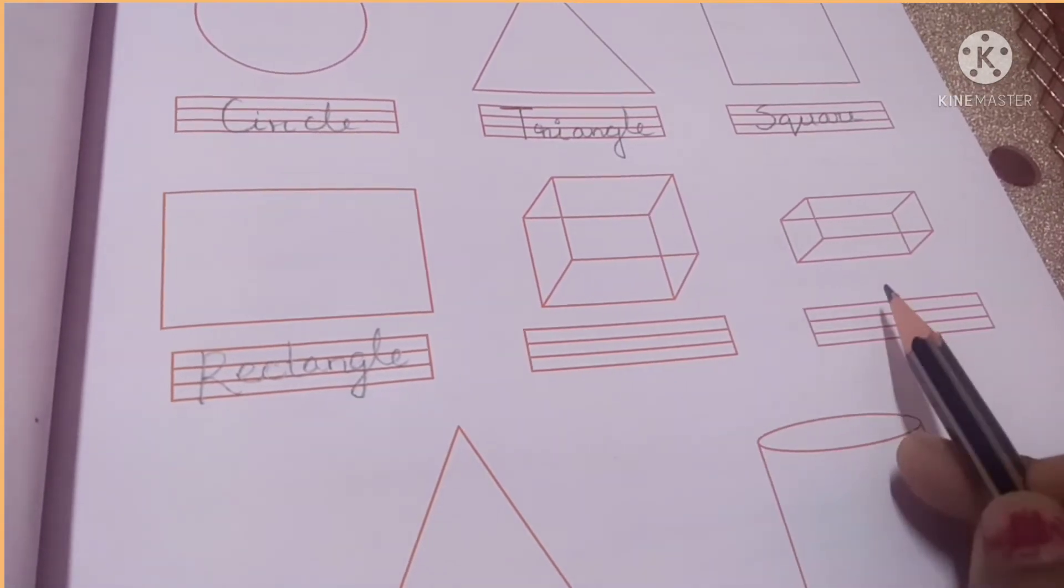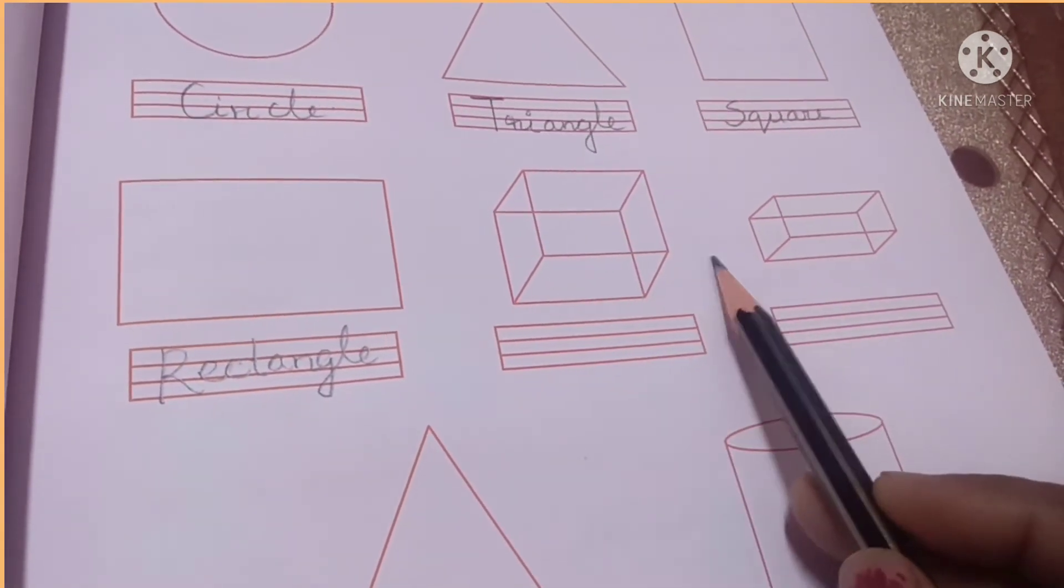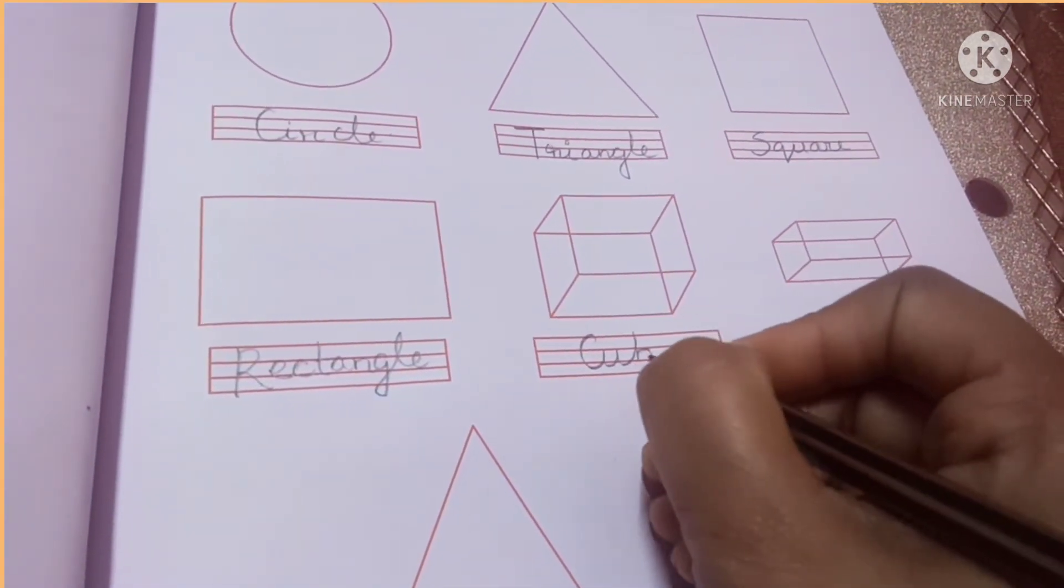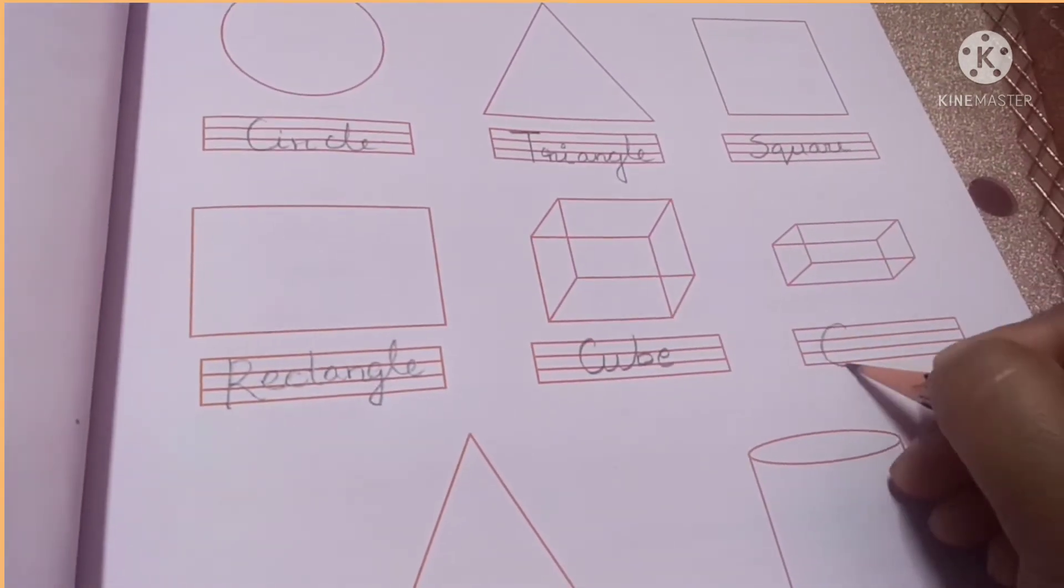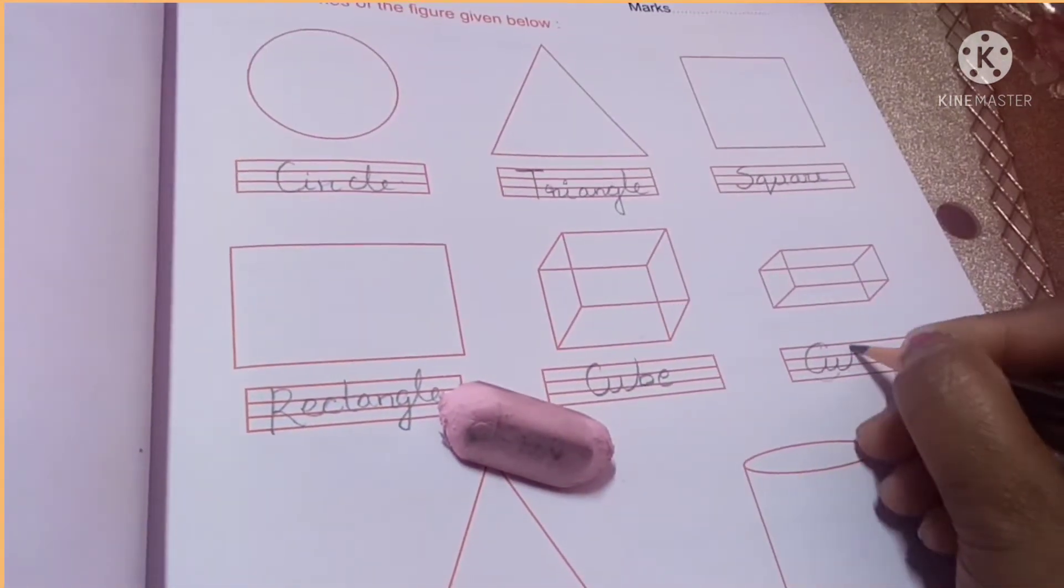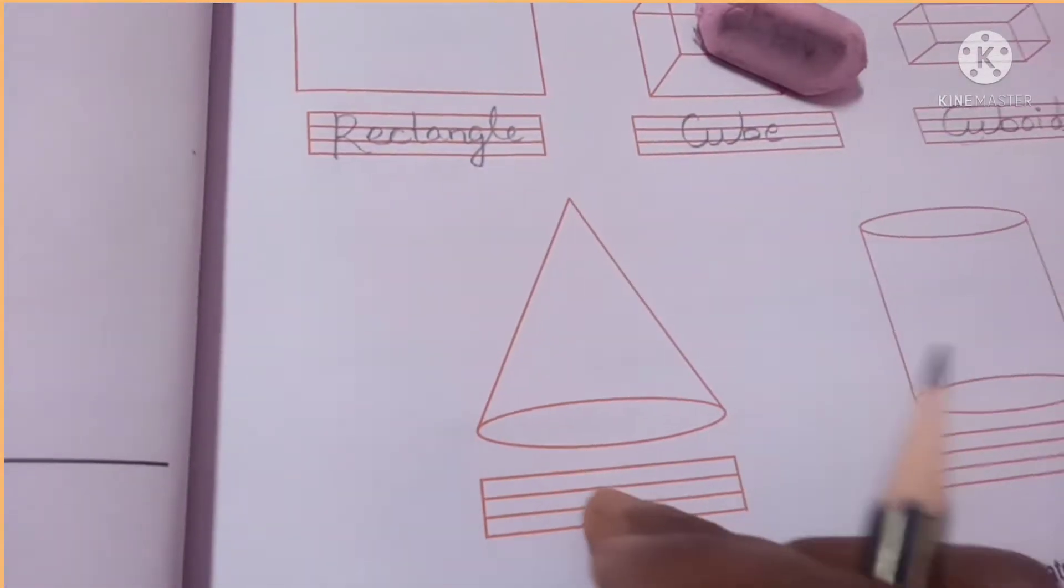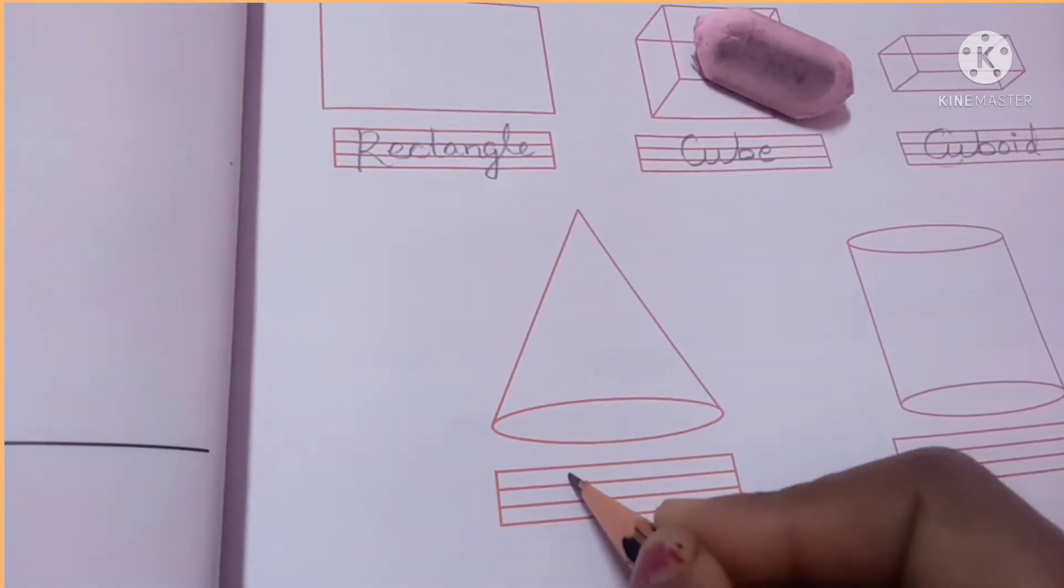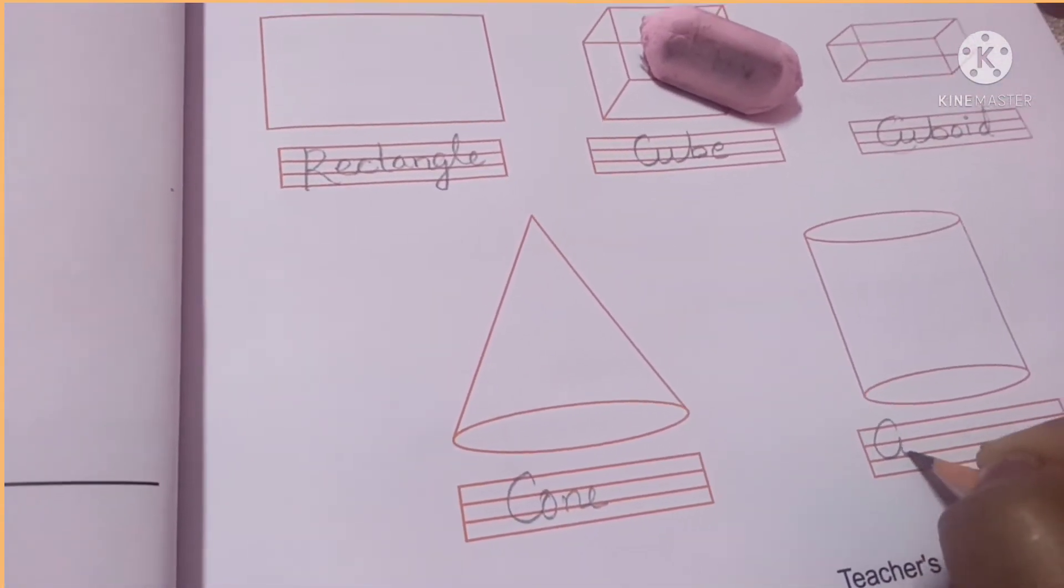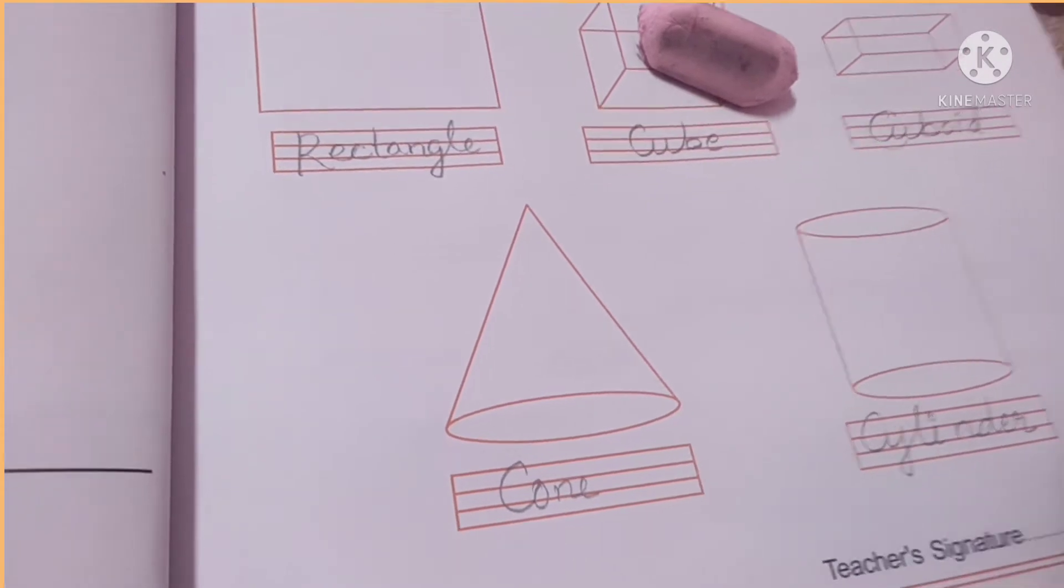Now coming to the solid shapes. These are solid shapes. I think so far I have sent you the video about these two shapes, that is cube and cuboid. So this is cube. C-U-B-E. Cube. And this is cuboid. C-U-B-O-I-D. Cuboid. What about this shape? What is the name of this shape children? Have you been able to identify? Yes, this is cone. C-O-N-E. Cone. And what is this? This is cylinder. C-Y-L-I-N-D-E-R. Cylinder.